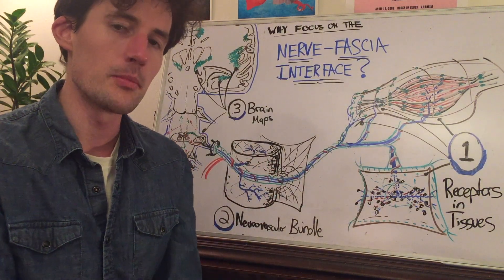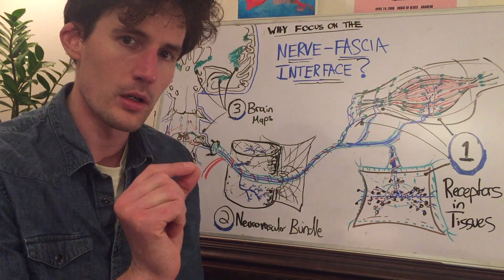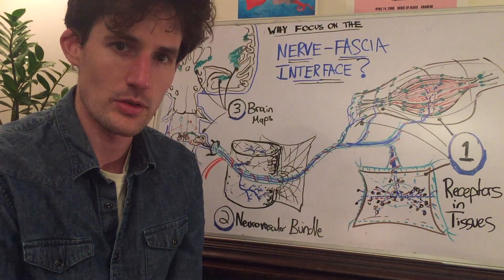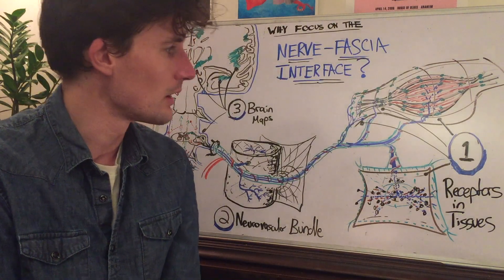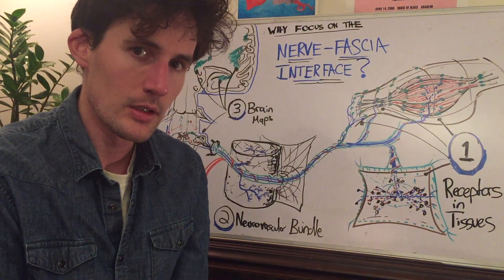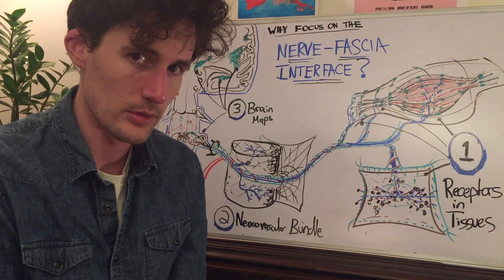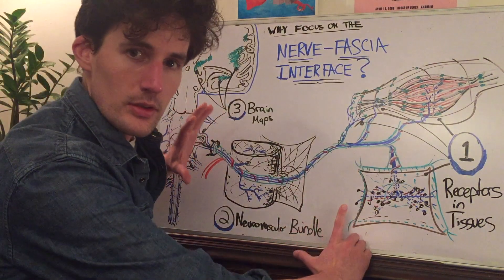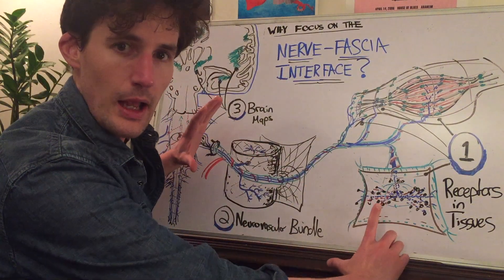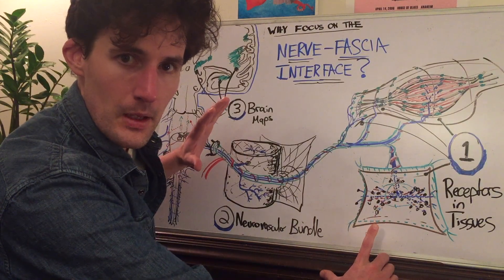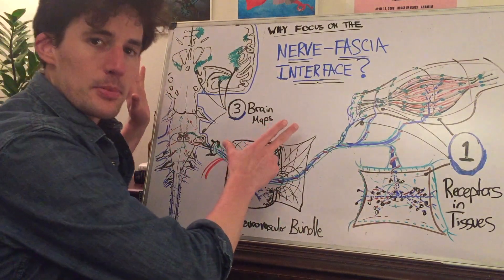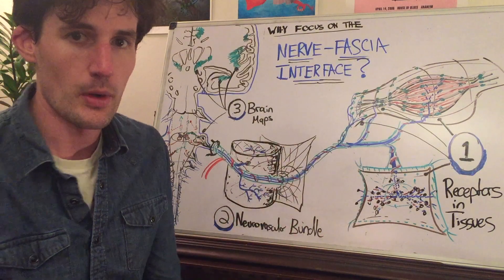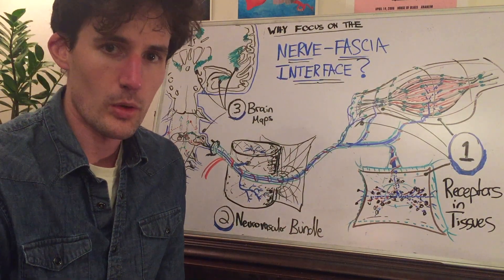If those are your goals, then it makes some sense to focus your work on the interface — architectural and functional — between the nervous and fascial systems. In particular, it's helpful to keep in the back of your head some awareness of three things: the receptors that live in the tissue, the neurovascular bundle that carries the nerve out toward the tissue from midline, and the maps or representations that the brain and spinal cord make of its surrounding environment. So let's take those one by one.